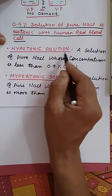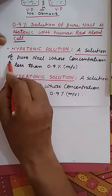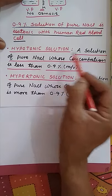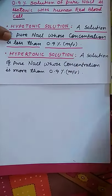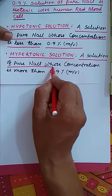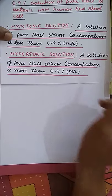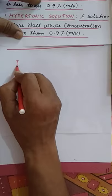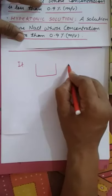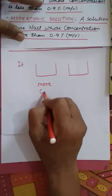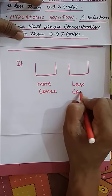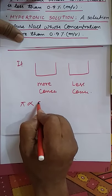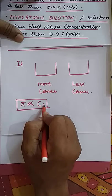A solution of pure NaCl whose concentration is less than 0.9% mass by volume is called a hypotonic solution. A solution of pure NaCl whose concentration is more than 0.9% mass by volume is called a hypertonic solution. Since π is directly proportional to concentration, a more concentrated solution has a higher osmotic pressure.